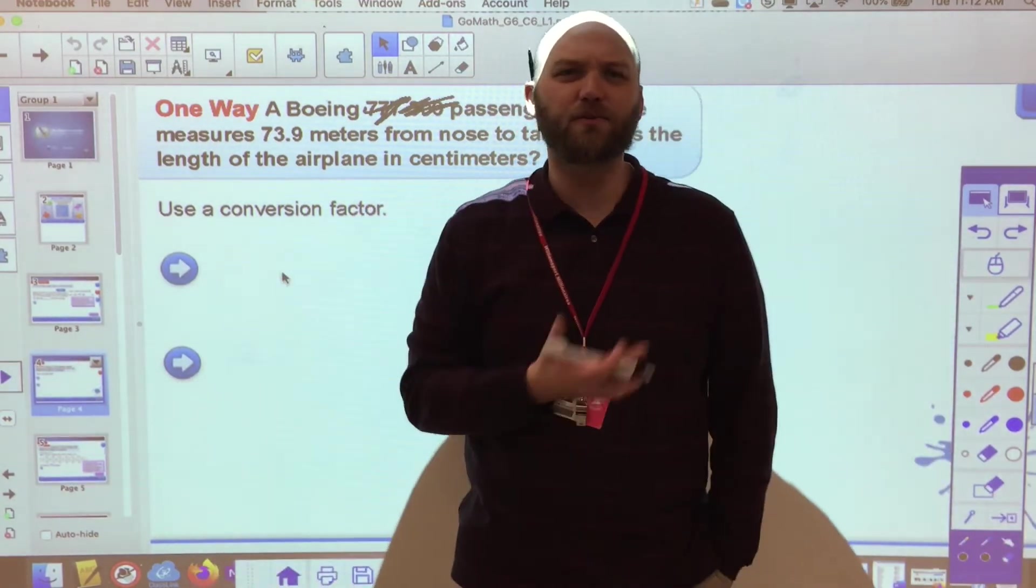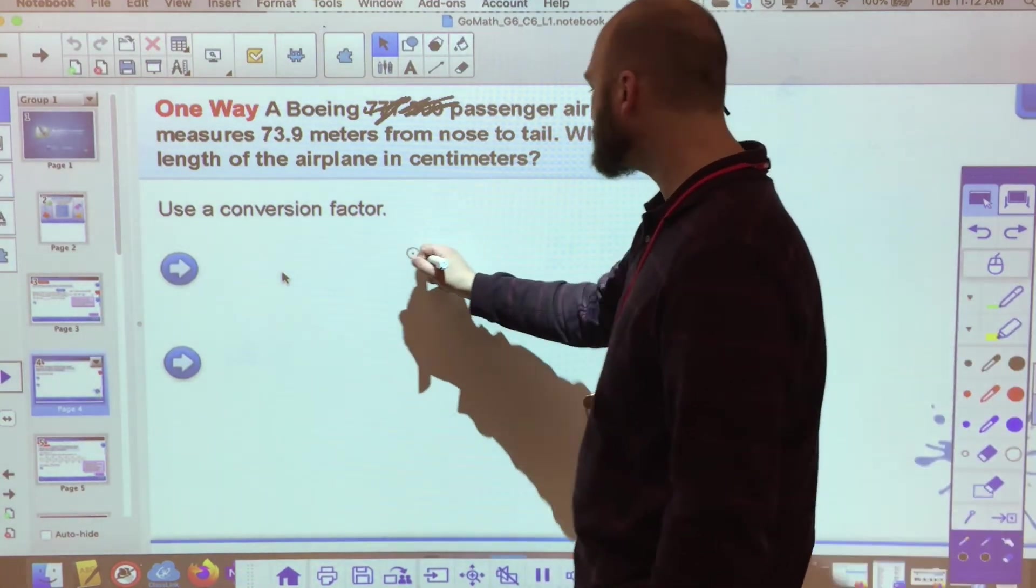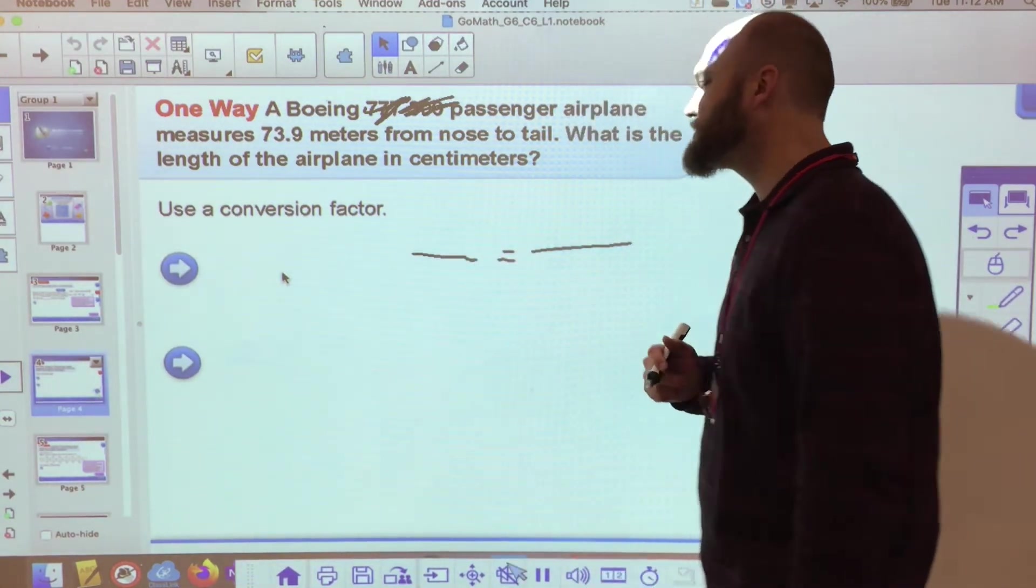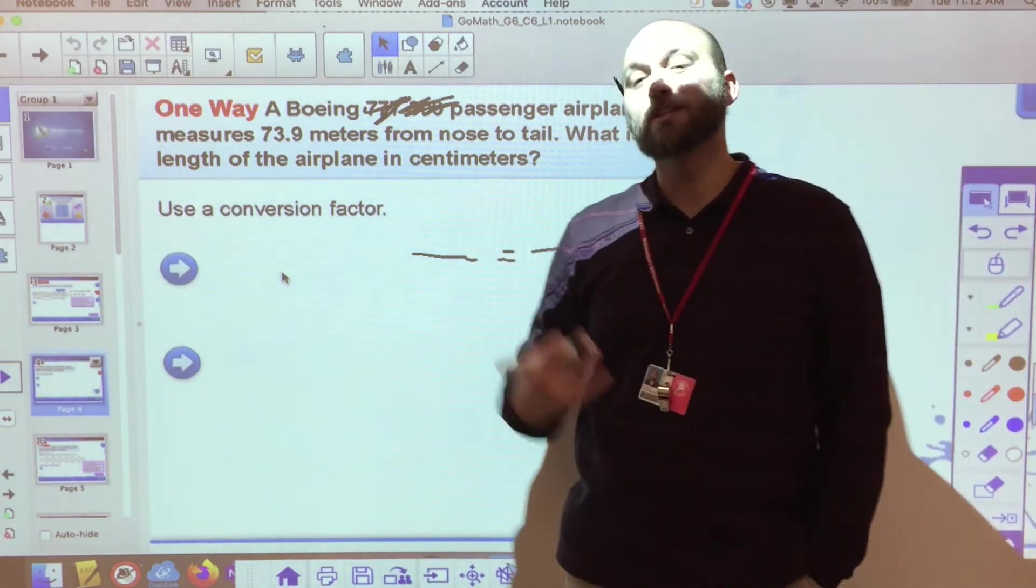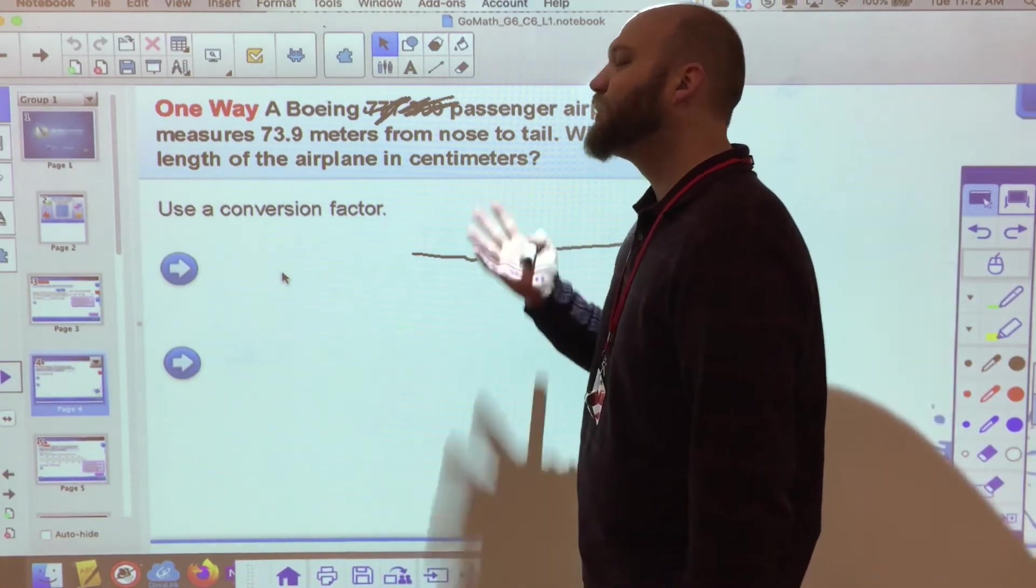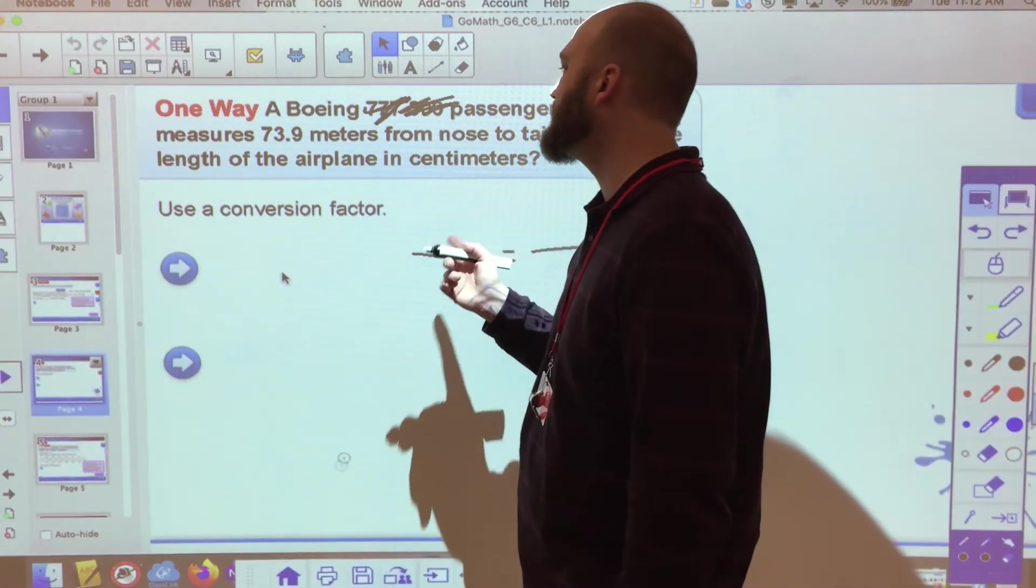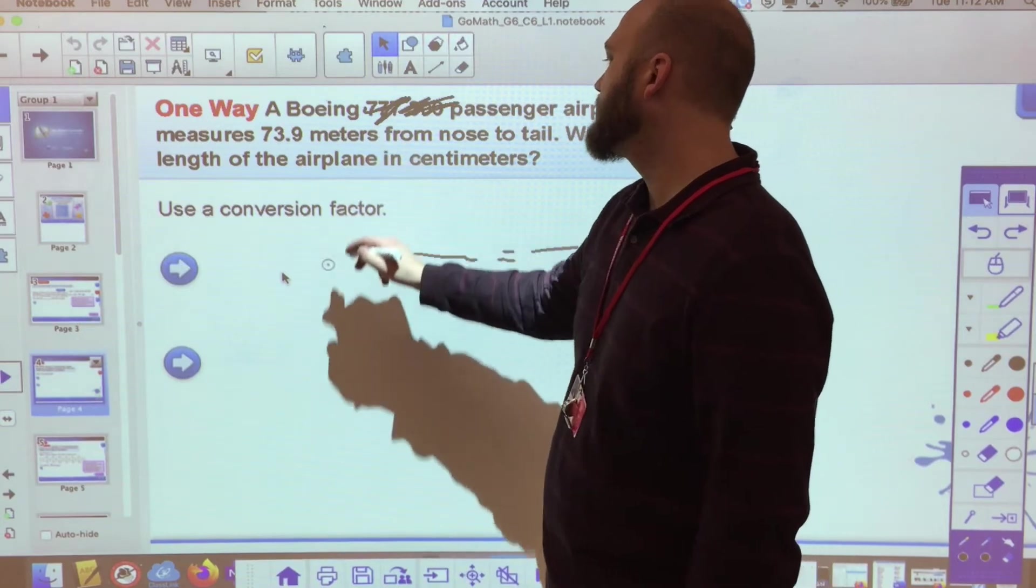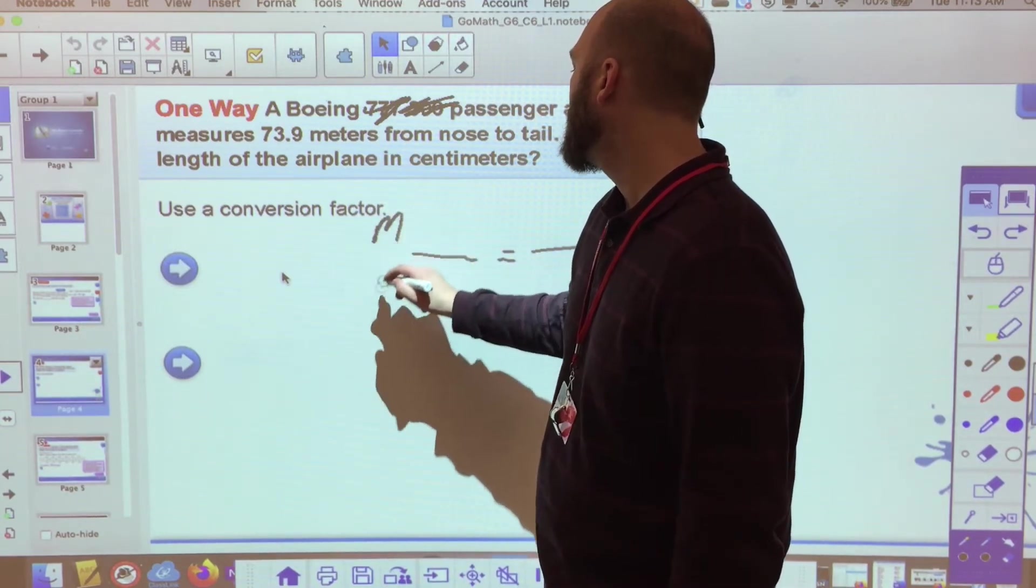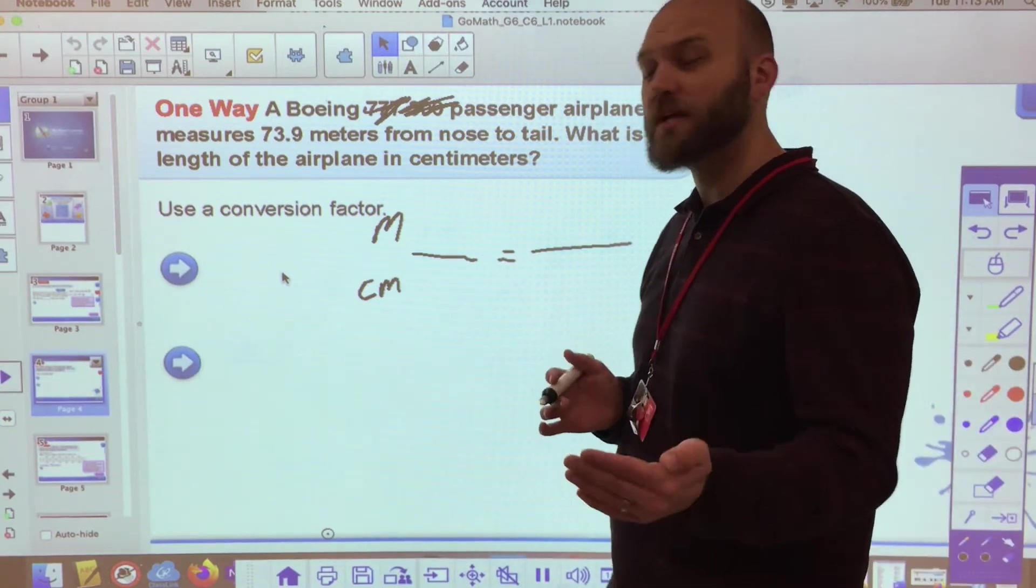I need to know that I have seventy-three and nine-tenth meters and I need that length in centimeters. And it doesn't even matter that it's an airplane. It could be a hockey rink or whatever I want to solve. So I set up my conversion factor or I set up my equivalent rate, my equivalent ratio. However I want to look at this. And I know that I have seventy-three and nine-tenth meters. So I'm dealing with two things. I've got meters and centimeters.